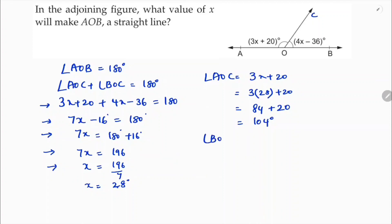In the same way, BOC, if you calculate, is 4x minus 36. 4 times x is 28 minus 36. So 4 times 28 is 112 minus 36.